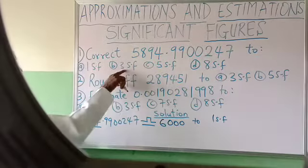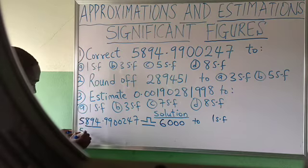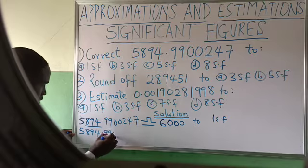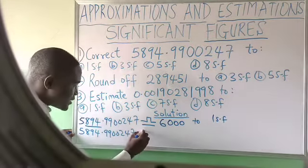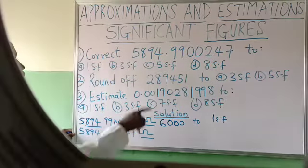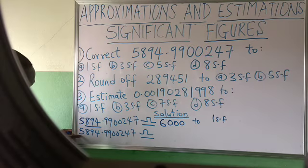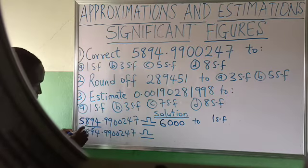Now, to 3 significant figures, I will rewrite everything again: 15894.9900247. I put my sign of approximation — very important. For 3 significant figures, I start from the first non-zero number, which is 5, and count three: one, two, three. I stop at 9.